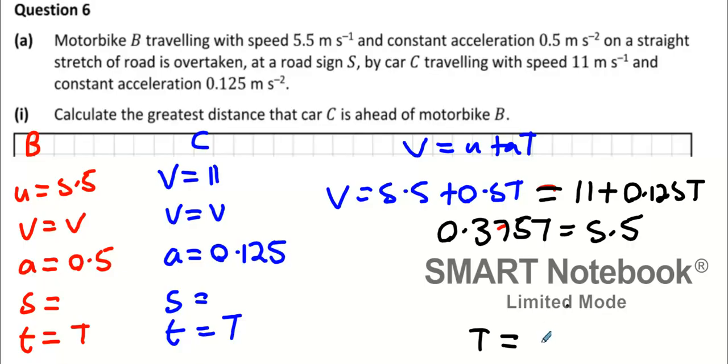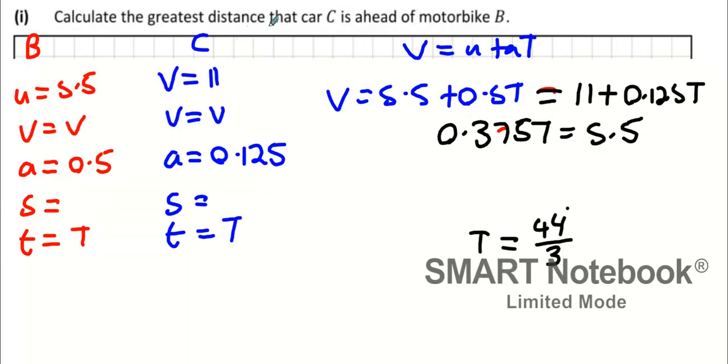We get 44 over 3, and the time is 44 over 3. Now the question is also asking what's the greatest distance, so I'm going to have to find the distance covered by B and the distance covered by C to find out which one's ahead of which. Now that we know that's 44 over 3, we're going to use the S formula: S equals UT plus a half AT squared.